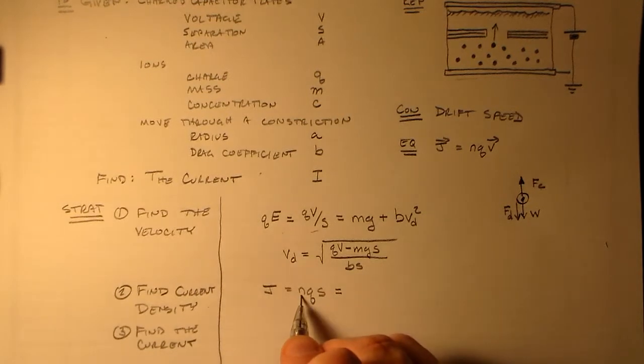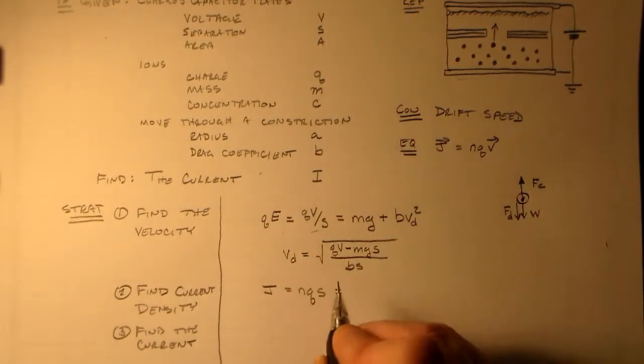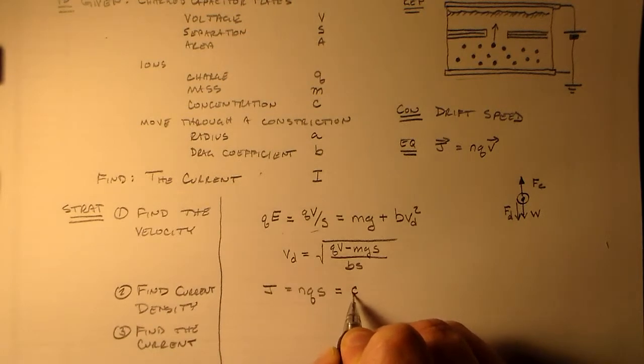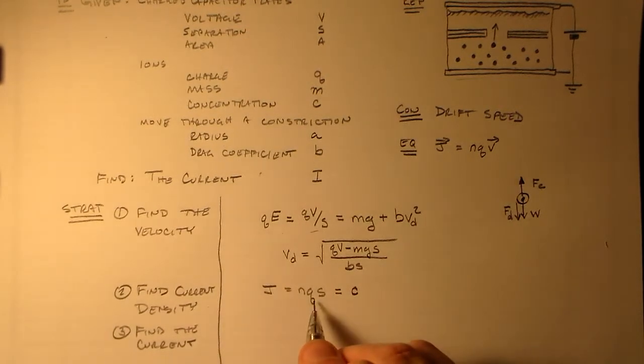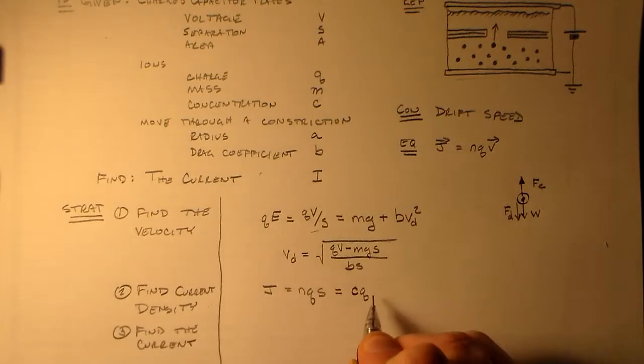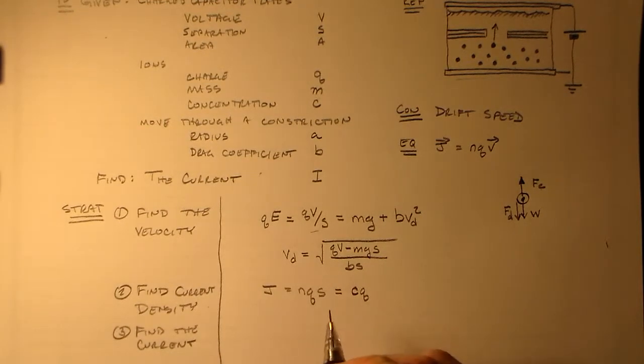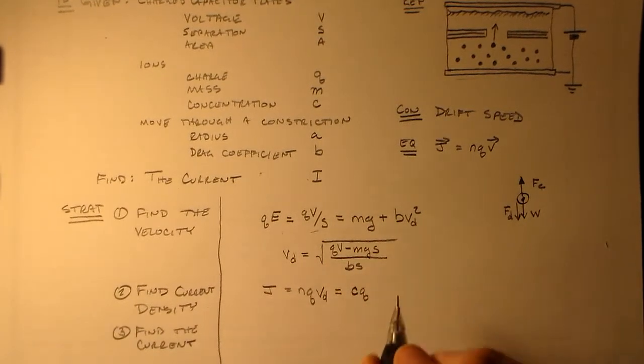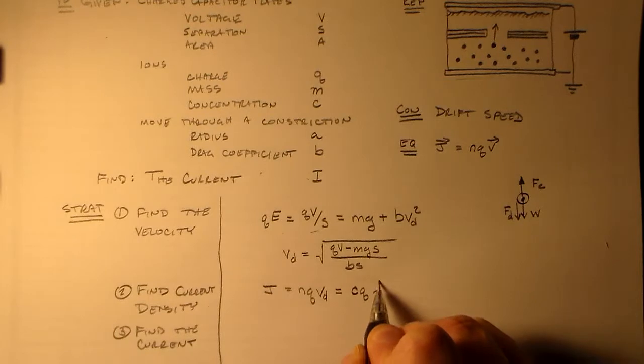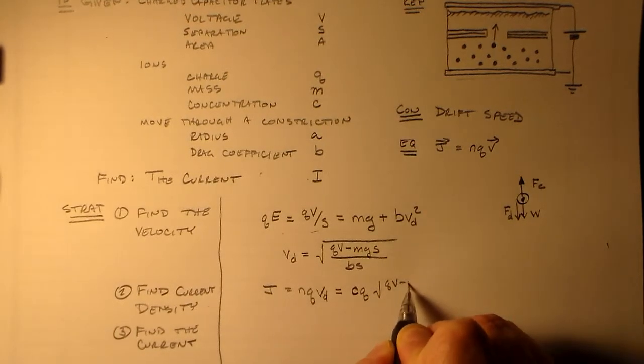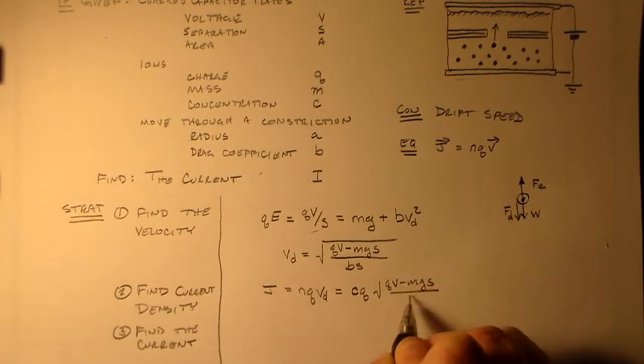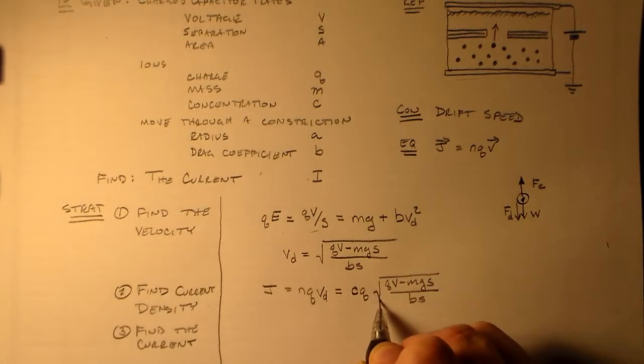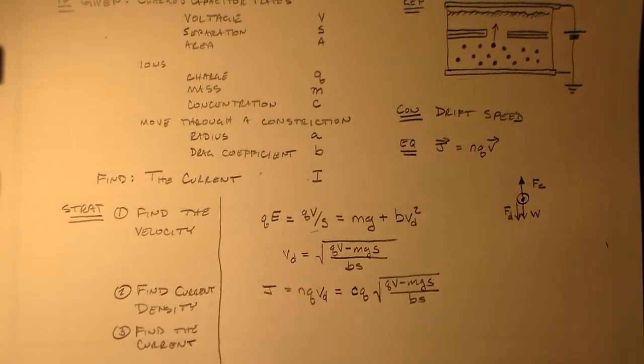So, N in this case is just the concentration, the number per unit volume of these charge carriers, which have a charge Q. And that's VD. And so, we have CQ times QV minus MgS over BS. So, everything's looking okay so far. We're happy with that.